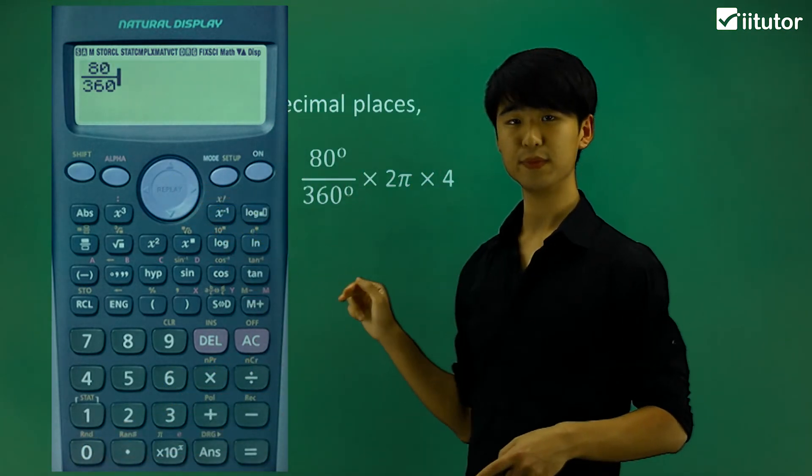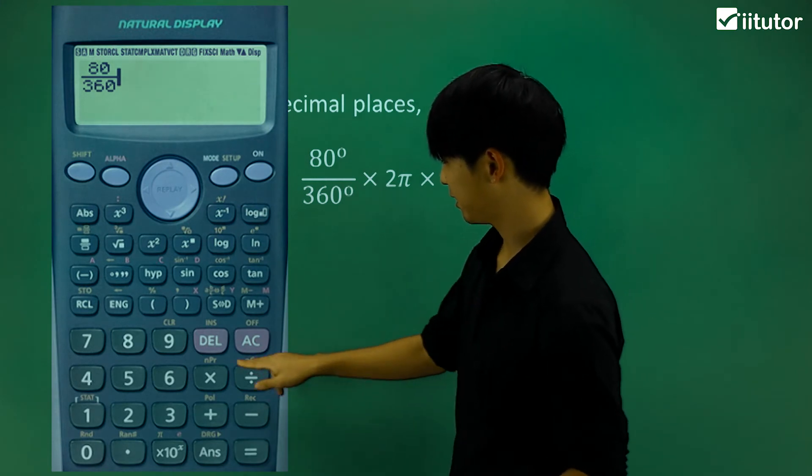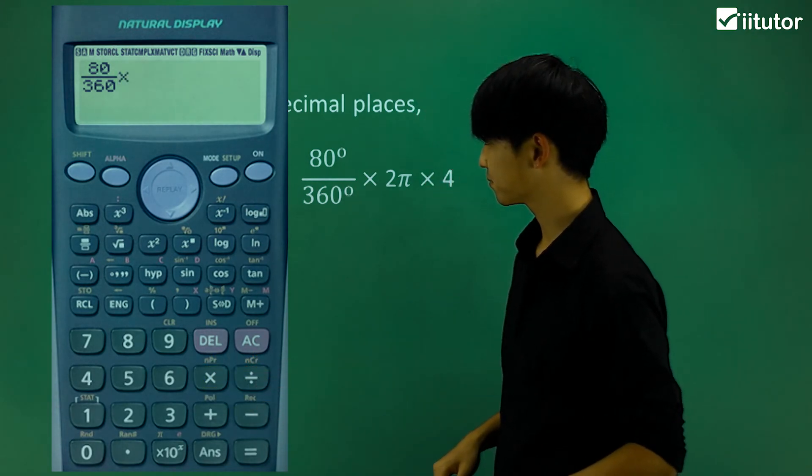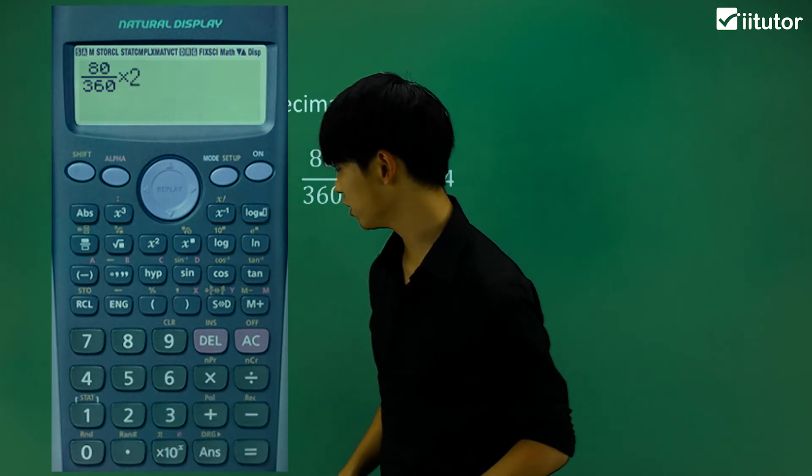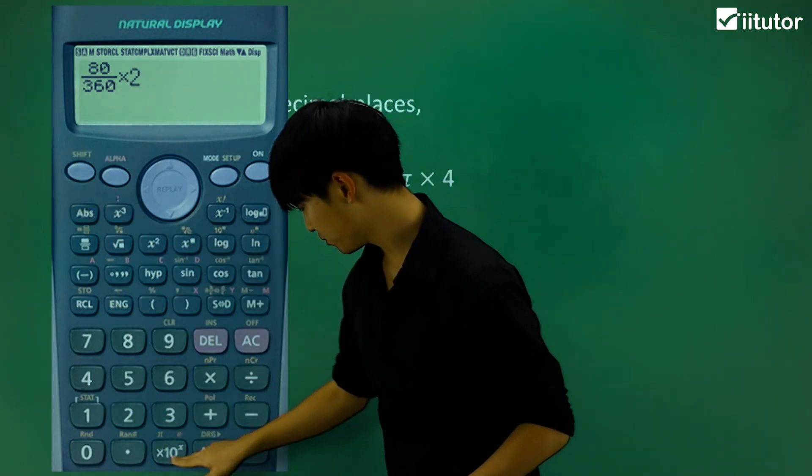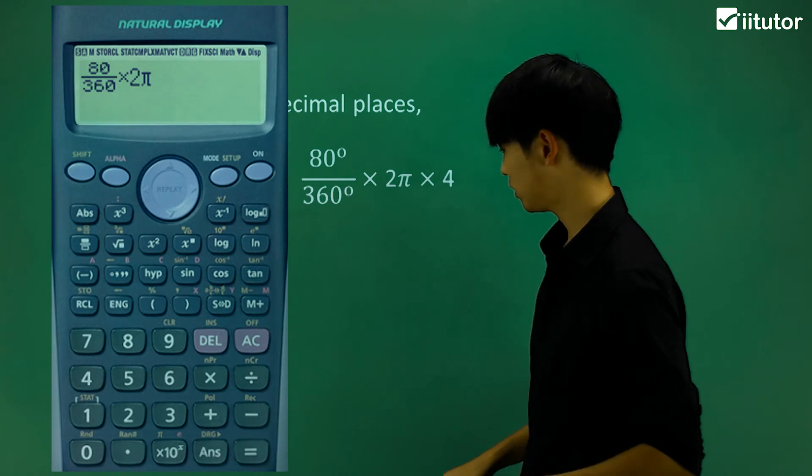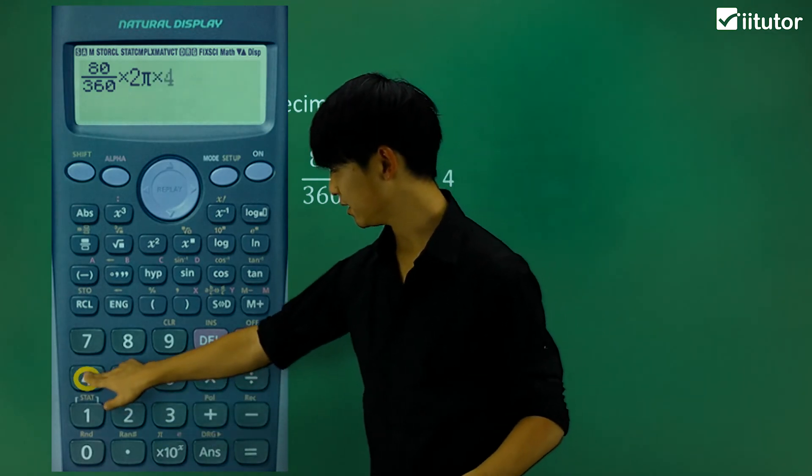Now go outside of the fraction and multiply by 2 pi. So 2, let's press shift pi and multiply finally by 4.